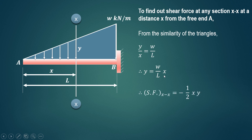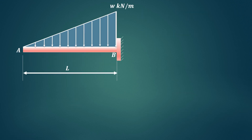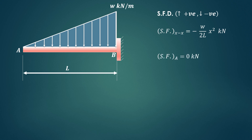The shear force at any section XX equals minus one-half times base times height. The base is x and the height y is W upon L into x. Since the shear force acts in the downward direction it is negative, so it is minus one-half into x into W upon L into x, giving minus W upon 2L times x squared kilonewton. The SFD convention is: upward force is positive and downward force is negative.